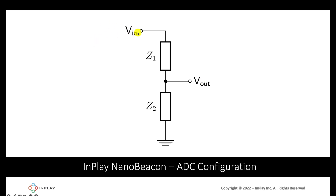Here's what a voltage divider circuit looks like. Basically the input VIN would be the signal coming from the sensor, and then you would read from Vout. You would choose the two resistors to split the circuit and split the voltage according to the ratio you want, so that the maximum for Vout would be under the maximum allowed voltage for the input to the ADC pin. We'll show an example of how to do this later in this video.